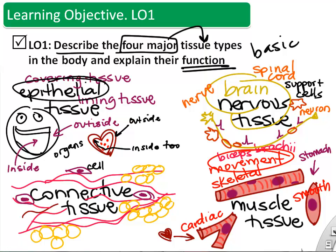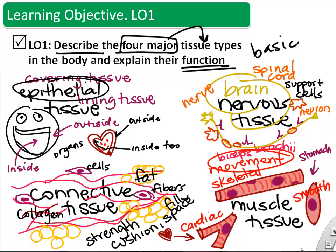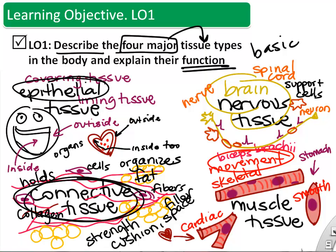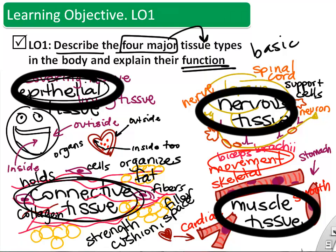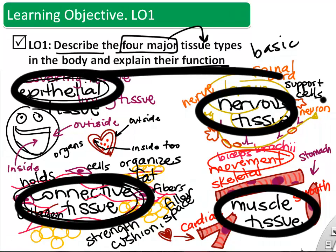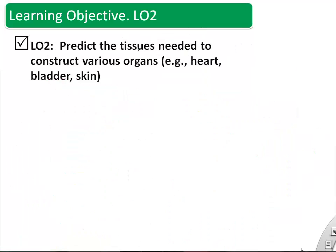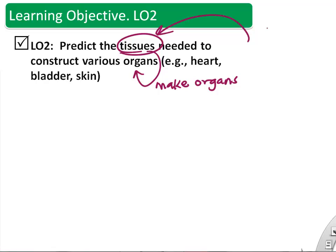Connective tissue cells include fibroblasts and fat cells. There are also lots of fibers that the cells build, called collagen fibers and elastic fibers. Those are the four tissue types, and we will build some organs with those so you can see how they are organized and how they help each other out.